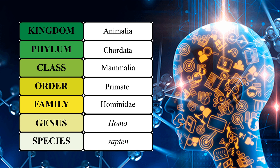For example, if we look at the classification of human beings, we belong to the kingdom Animalia. In that, phylum Chordata, class Mammalia, order Primate, family Hominidae, genus Homo, species Sapien. In this manner, every living organism is classified into different groups and subgroups.